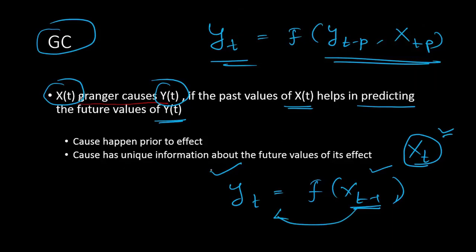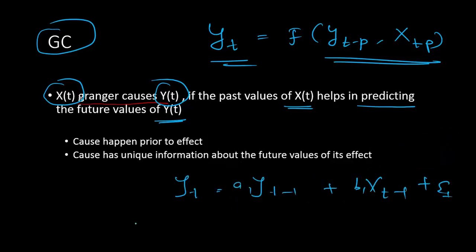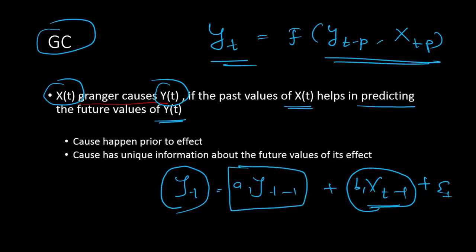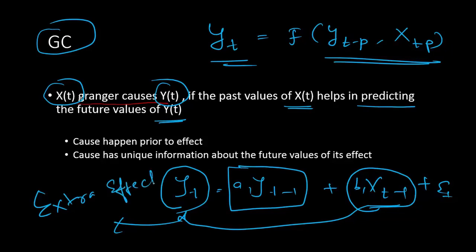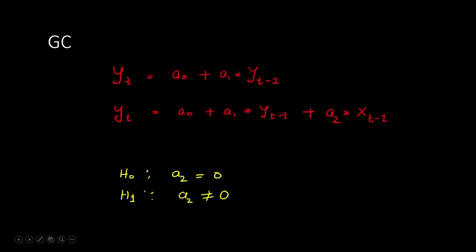The second condition is that the cause has unique information about the future values of its effect. In other words, the lags of Xt help us predict the future values of Yt even in the presence of the lag of Yt — it must have an extra, incremental effect. Mathematically, we can express and explain Granger causality this way.